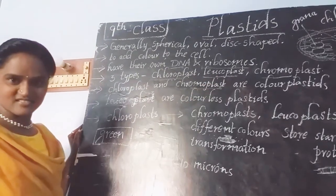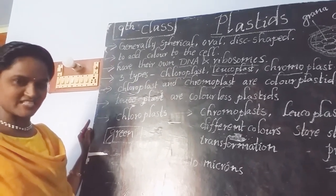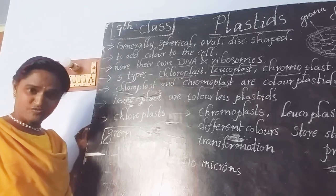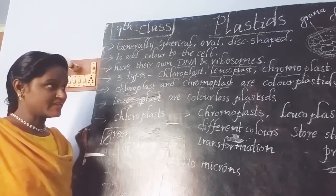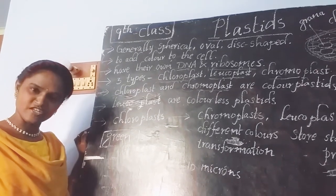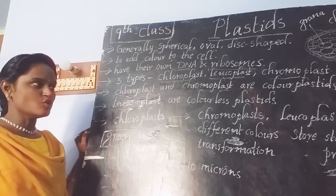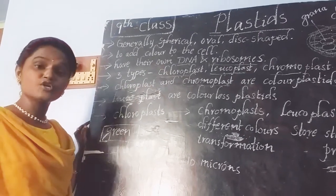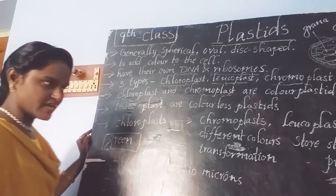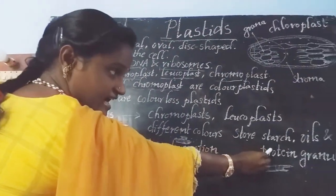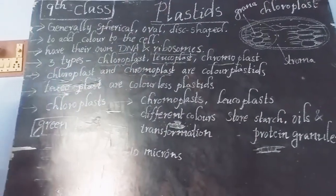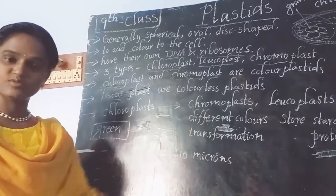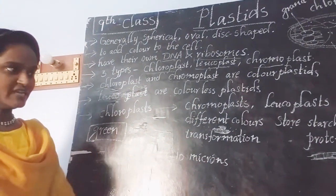When we talk about leucoplast, these are also called colorless plastids or white plastids. While the main function of plastids is to add color, leucoplast does not add any color. Instead, leucoplast is involved in storing certain materials. They are able to store starch, oil, and protein globules inside the plant.